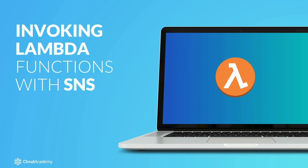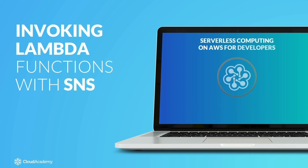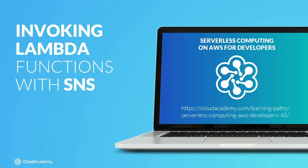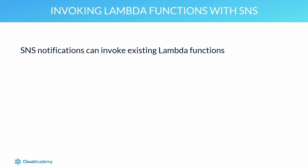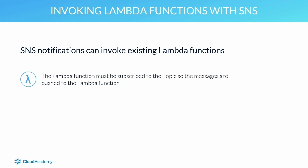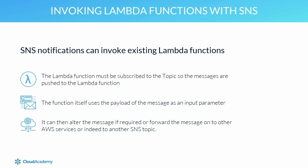Much like SQS, SNS also integrates well with AWS Lambda, a key serverless compute service. This integration allows SNS notifications to invoke existing Lambda functions. The Lambda function has to be subscribed to the topic, and when a message is sent to the topic, it is pushed out to the Lambda function to invoke it. The function uses the payload of the message as an input parameter, where it can alter the message if required, forward it to another AWS service, or forward it to another SNS topic.